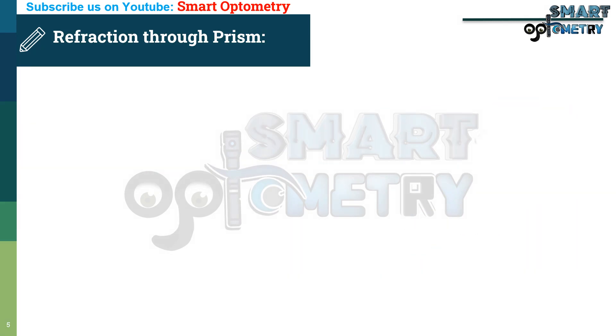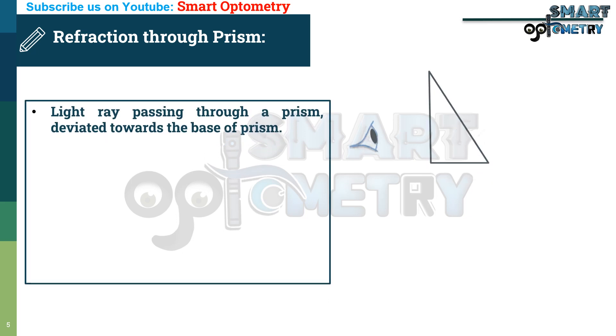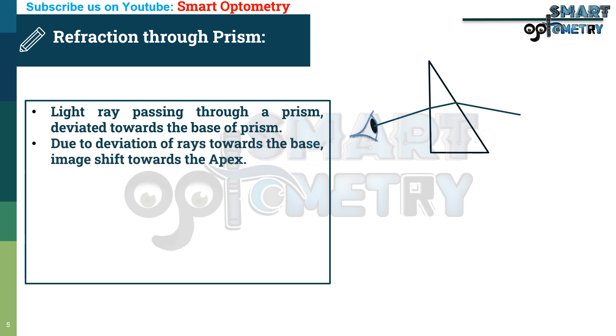Now, refraction through prism. Light ray passing through a prism deviated towards the base of a prism. Due to deviation of rays towards the base, image shift towards the apex.